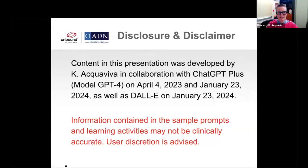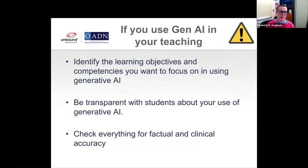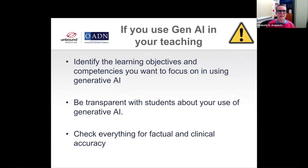You'll see that there's this giant red text that says 'information may not be clinically accurate.' This is really important as we talk about the use of generative AI. If you use generative AI in your teaching, one of the most important things when thinking about using a new technology is making sure that technology is facilitating you accomplishing your teaching goals — not that you're just finding a way to use a new toy. How many of you remember when clickers came out and everyone was using them, but no one was really using them in a way that made a whole lot of sense?